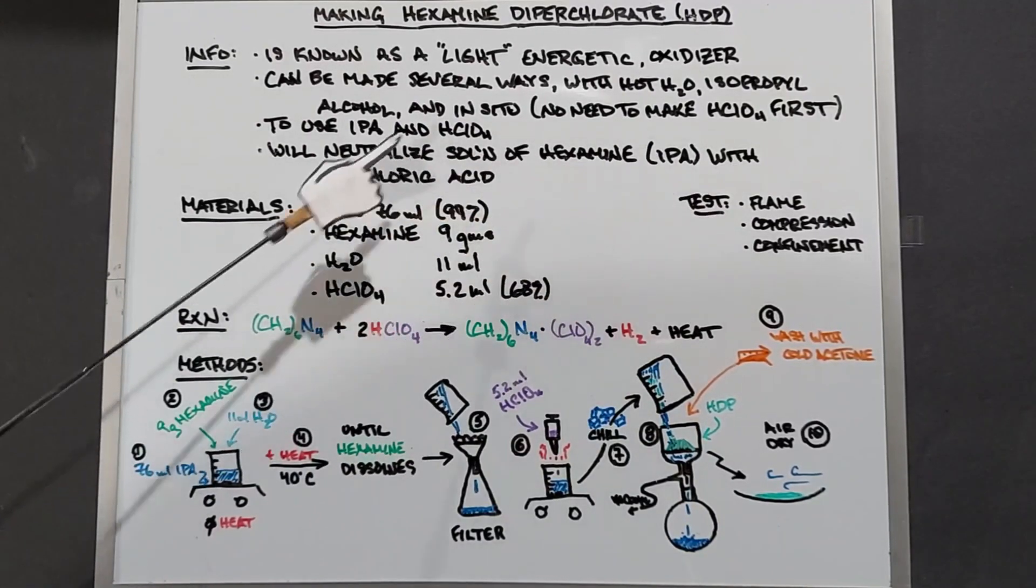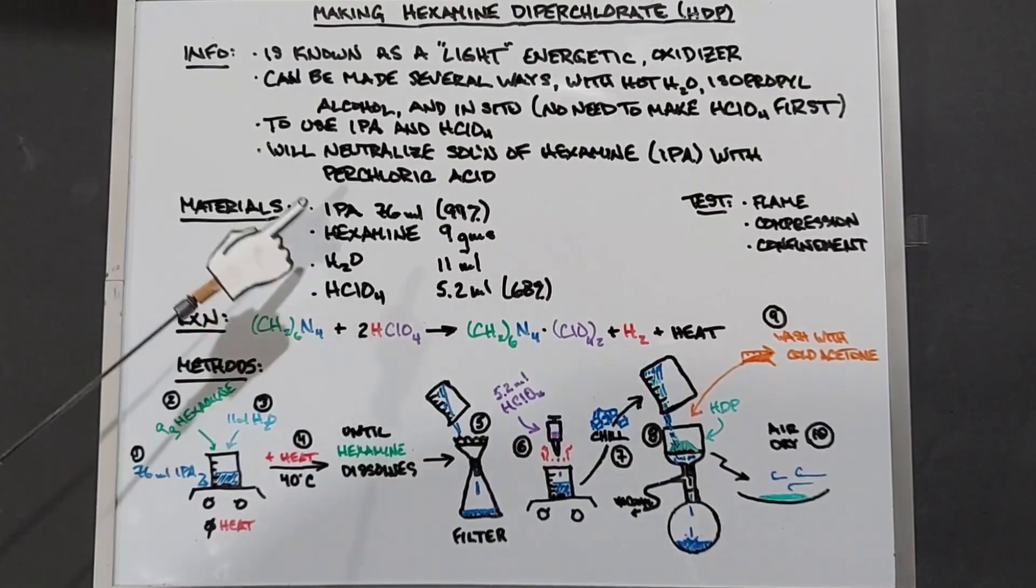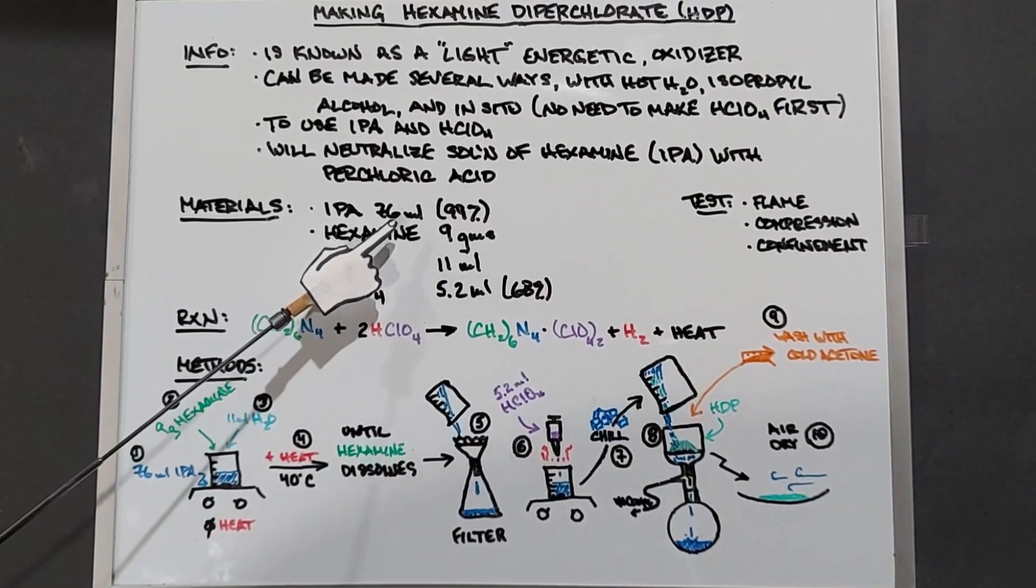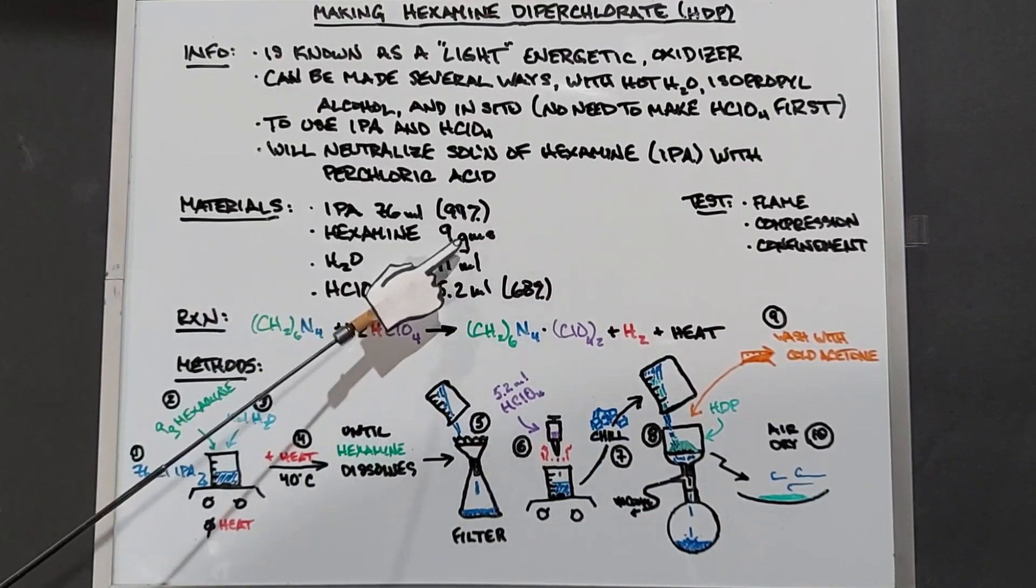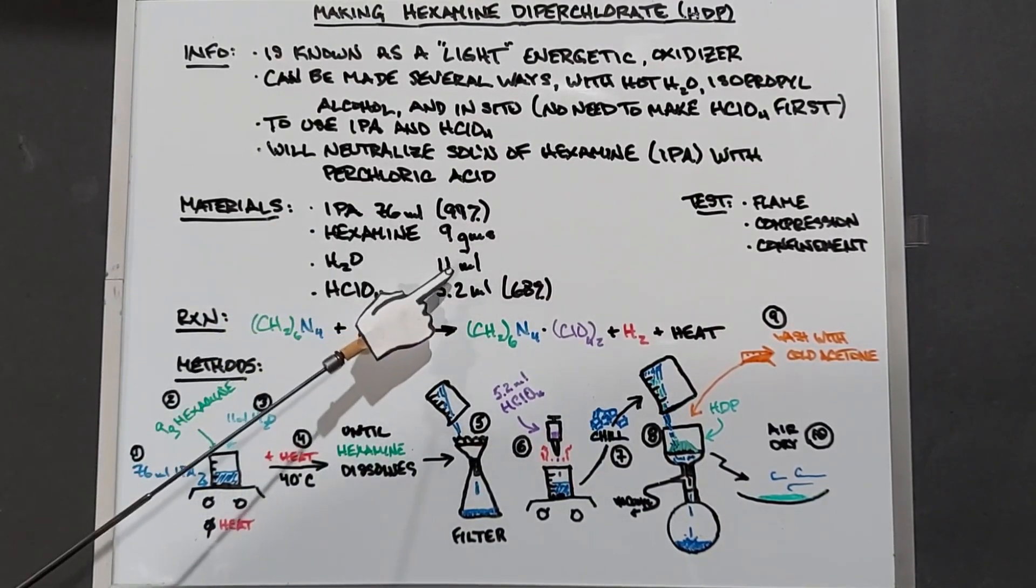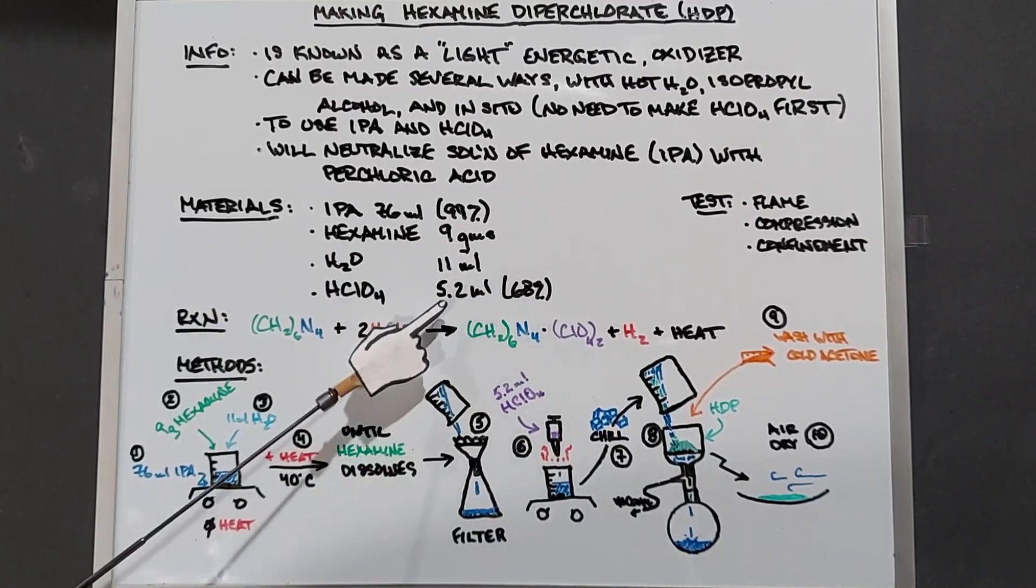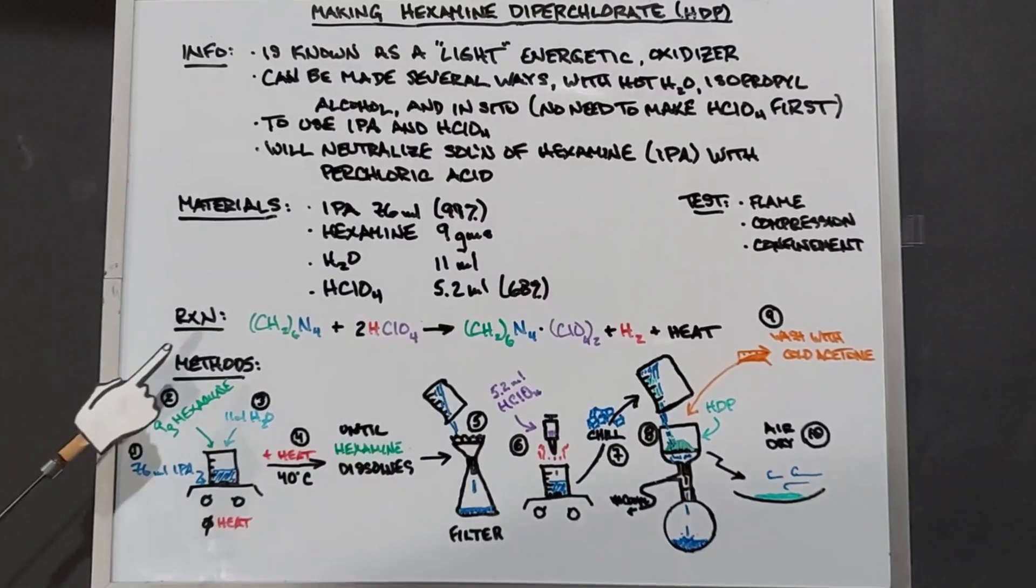Materials we need are isopropyl alcohol 99%, 76 milliliters, hexamine 9 grams, water 11 milliliters, and the perchloric acid of 68 percent that we made of 5.2 milliliters.